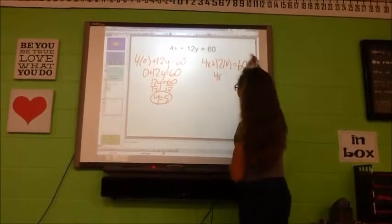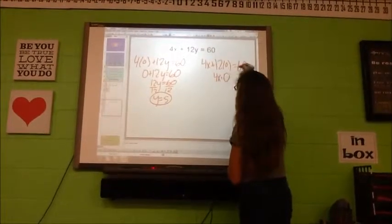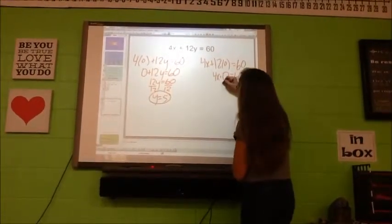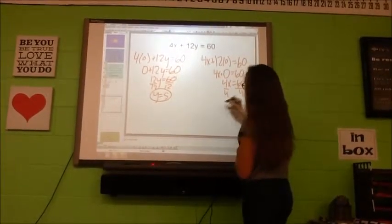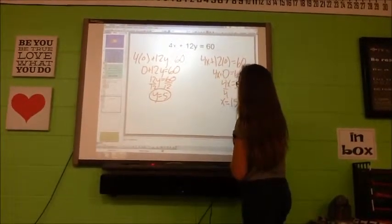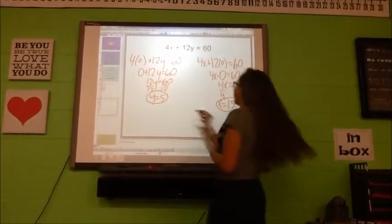To find the X you have to do 4X plus 12 times 0 equals 60. So then it's 4X, 12 times 0 is 0, so it's plus 0, equals 60. And that's 4X equals 60. Then you divide by 4 on both sides to get X equals 15.